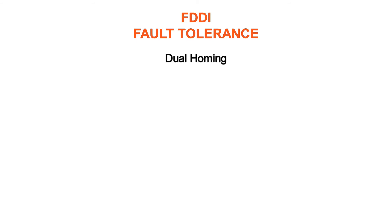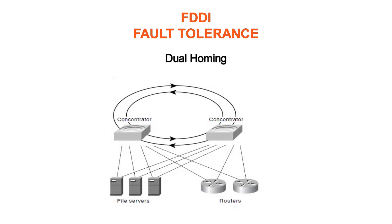Critical devices such as routers or mainframe hosts can use a fault-tolerant technique called dual homing to provide additional redundancy and to help guarantee operation. In dual homing situations, the critical device is attached to two concentrators. One pair of concentrator links is declared the active link, the other pair is declared passive. The passive link stays in backup mode until the primary link, or the concentrator to which it is attached, is determined to have failed. When this occurs, the passive link automatically activates.